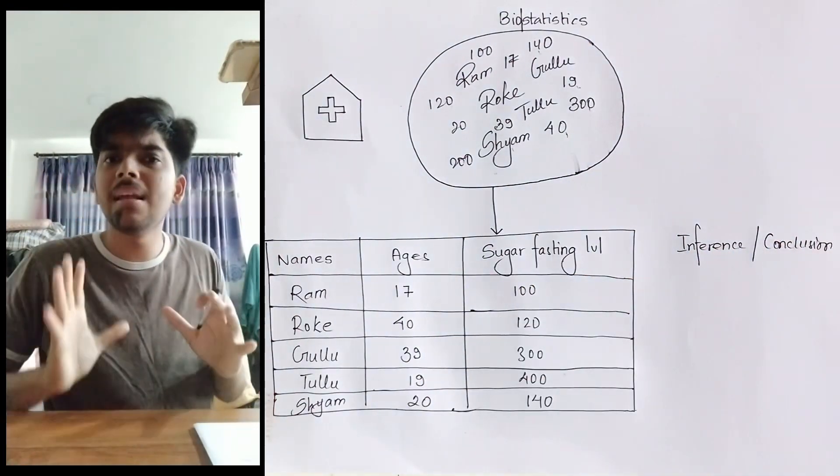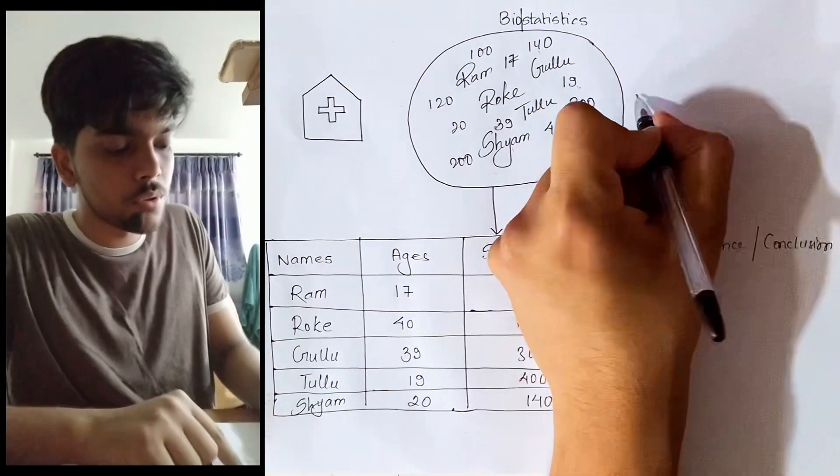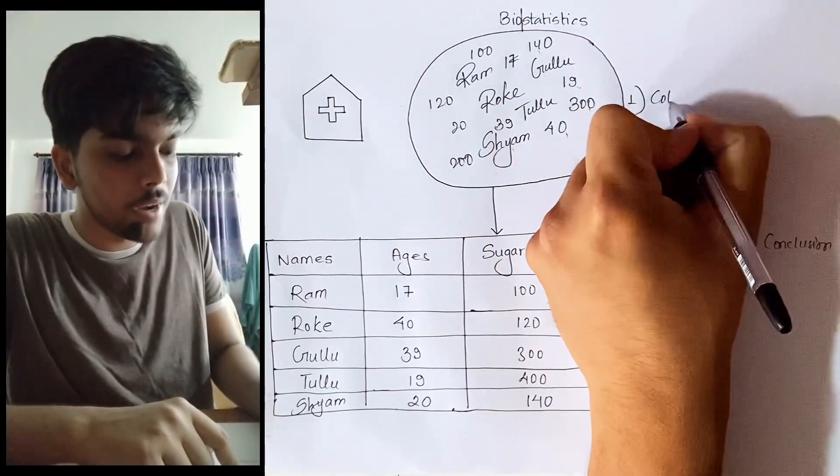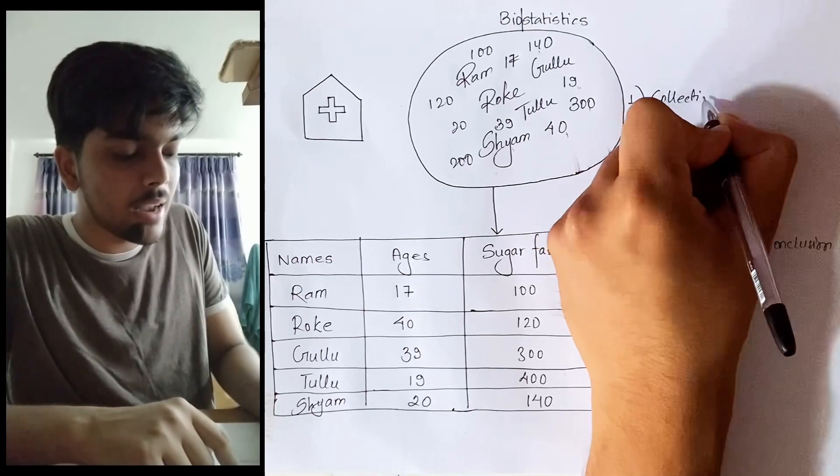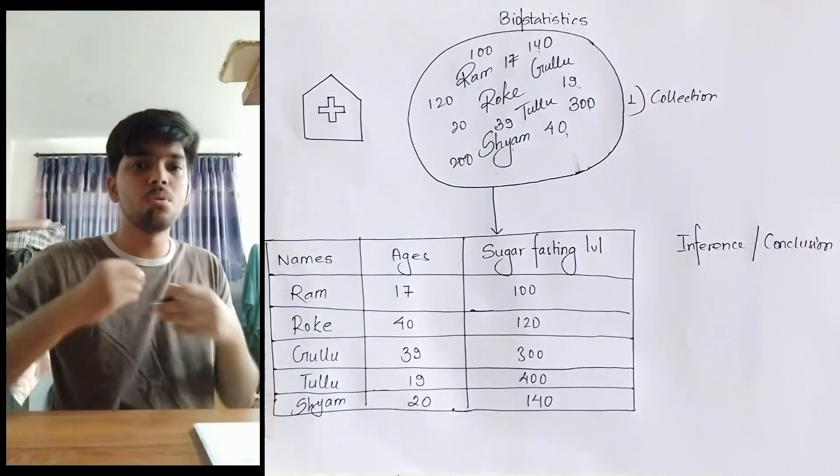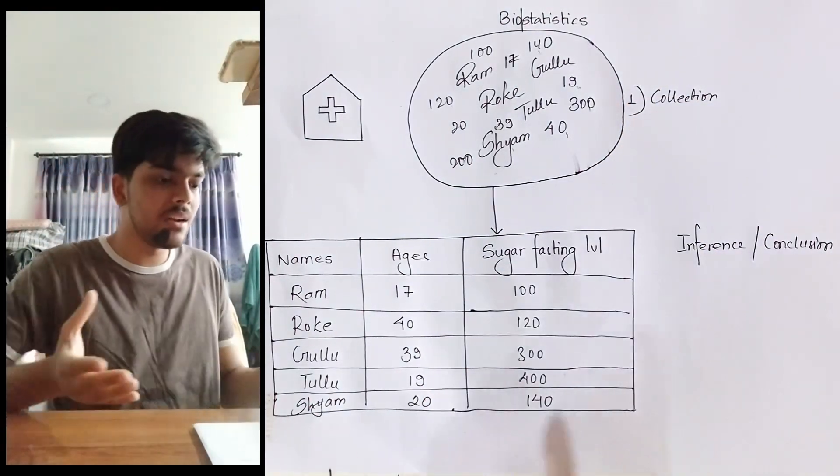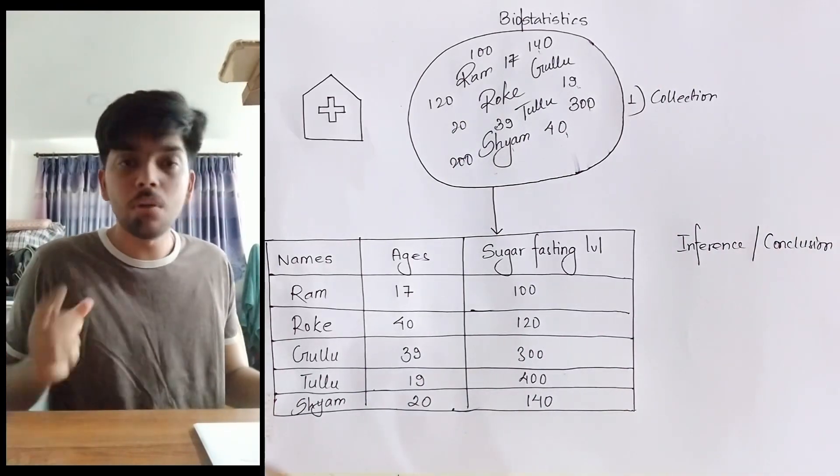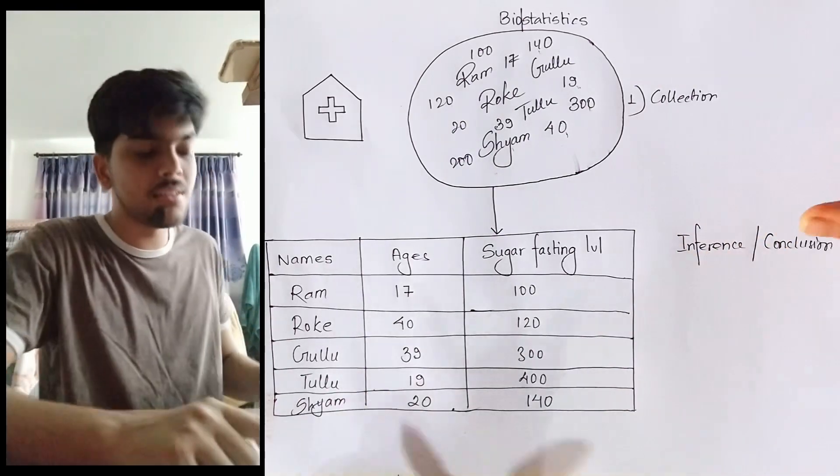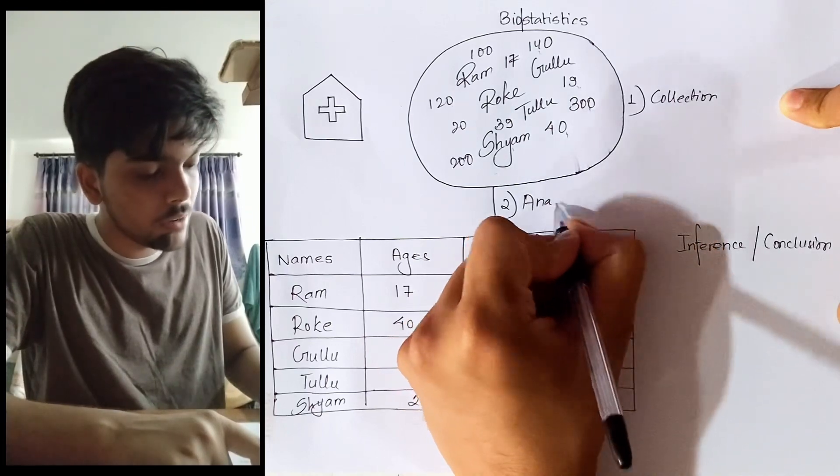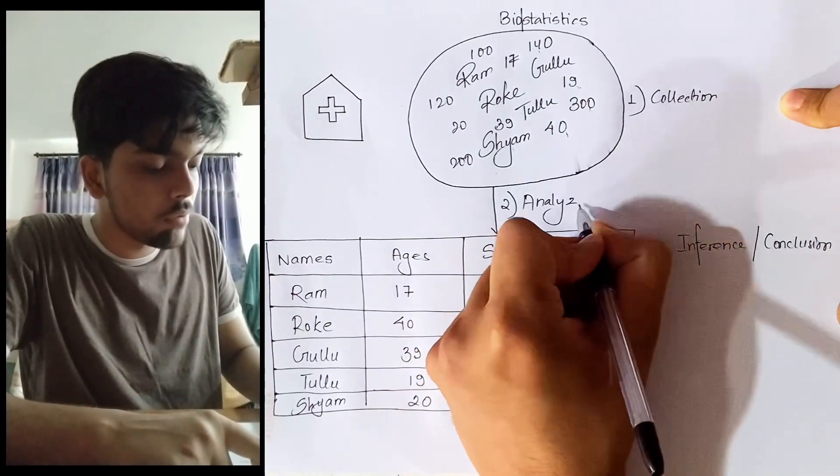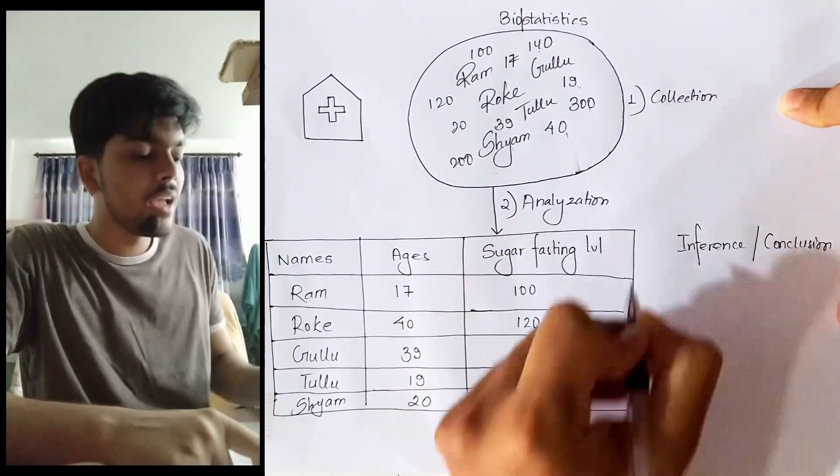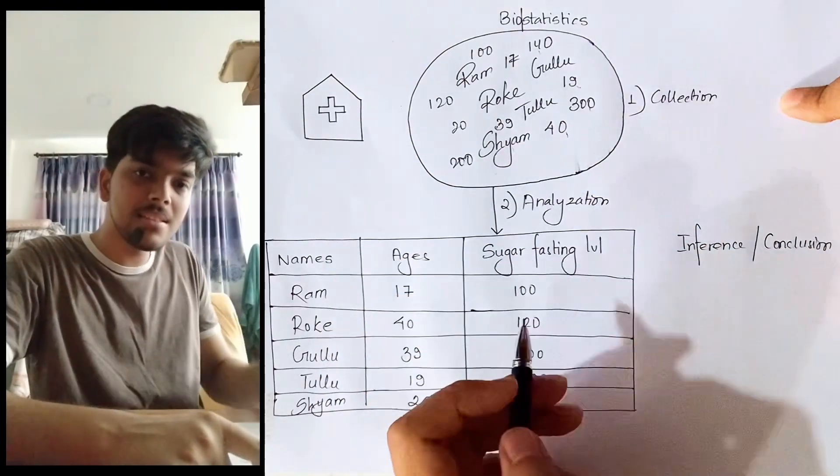Basically we have collected data. At least we have done that much. So the first step is collection of data. We have collected data but this data makes no sense at all because it is a bunch of mess. What we do now is analyze this data. So step two is analyzing.